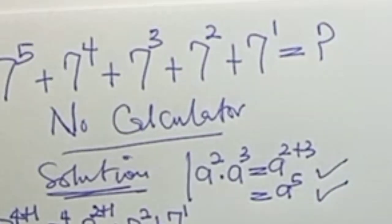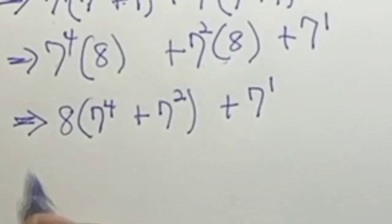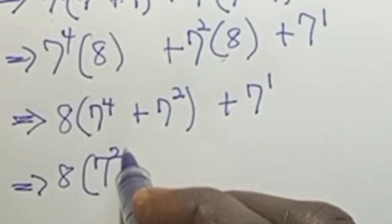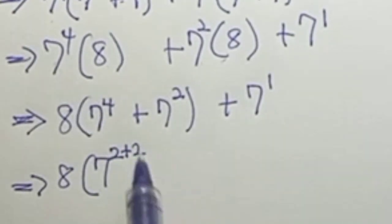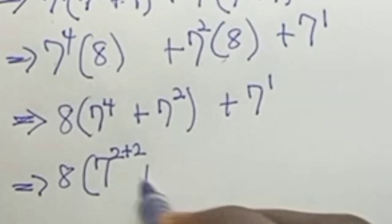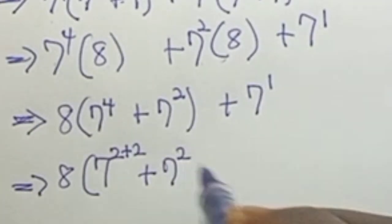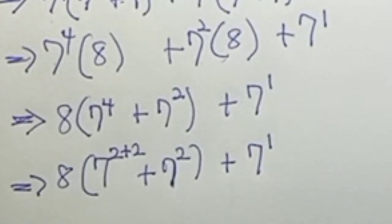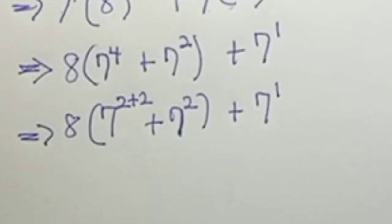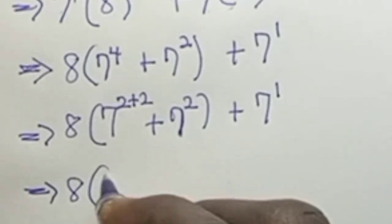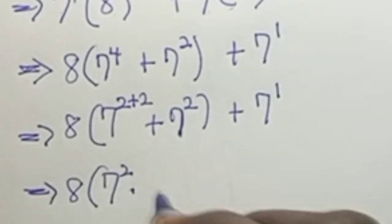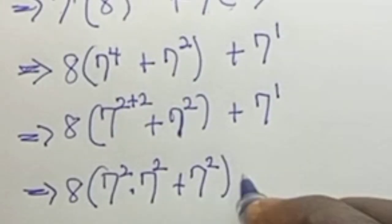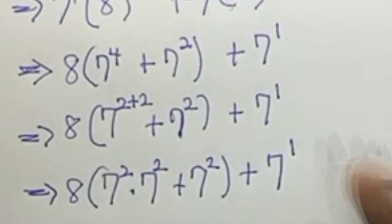Also, applying the exponent law we can split 7⁴ as 7 to the power of 2 plus 2, since 2 plus 2 is 4. So the expression becomes 8 times the quantity 7² times 7² plus 7² close the bracket, plus 7 to the power of 1.